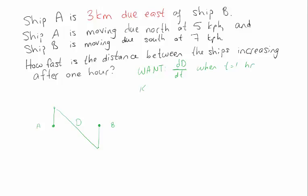Now what do I know? I know how fast my ships are moving, which means I know the rate of change of their position. So let's let A be the position of boat A, and B be the position of boat B. So what I know is that dA/dt is a steady five kilometers per hour, and dB/dt is a steady seven kilometers per hour.